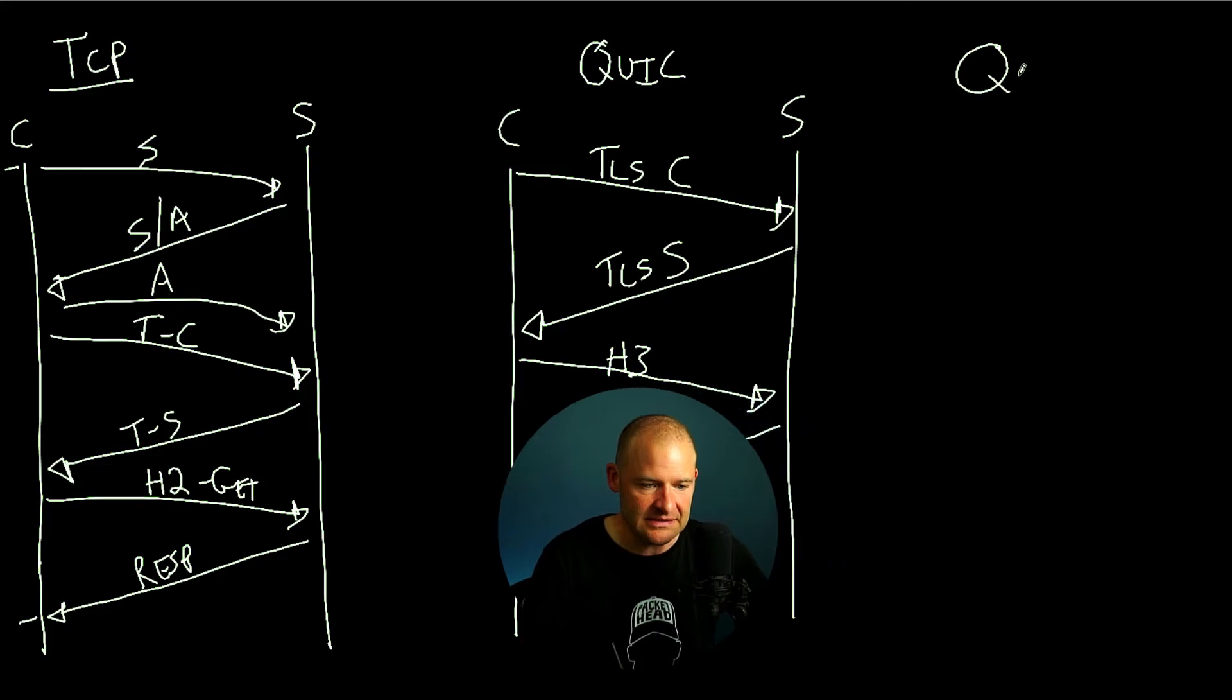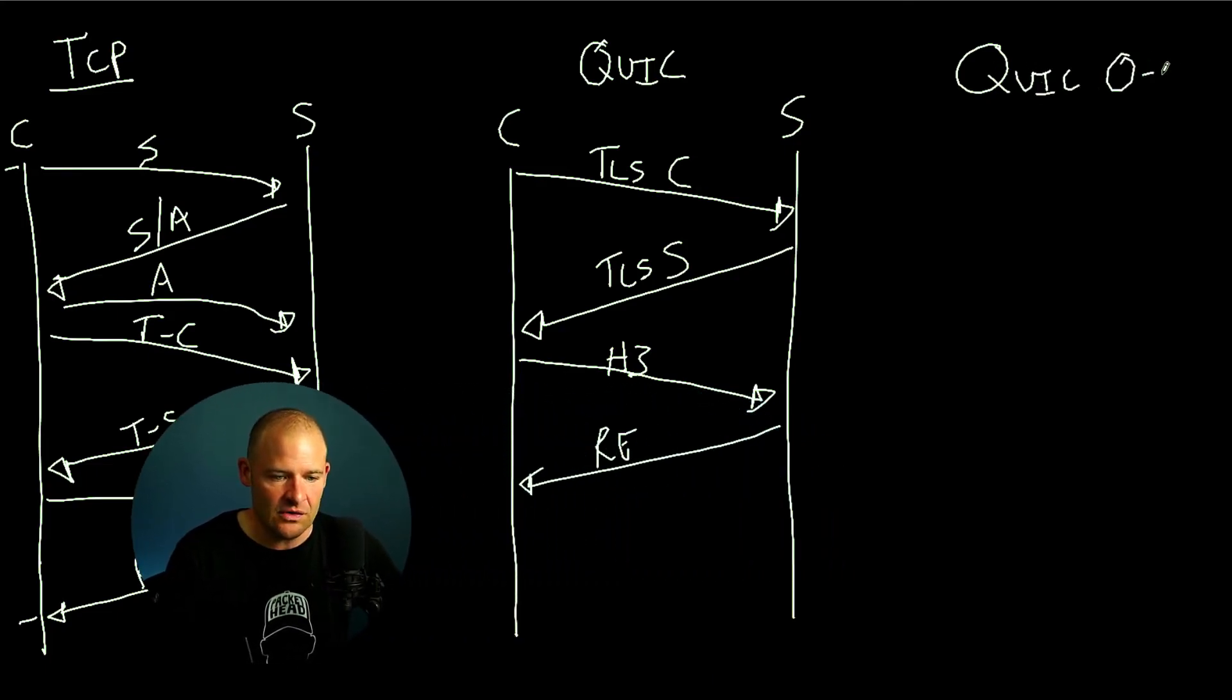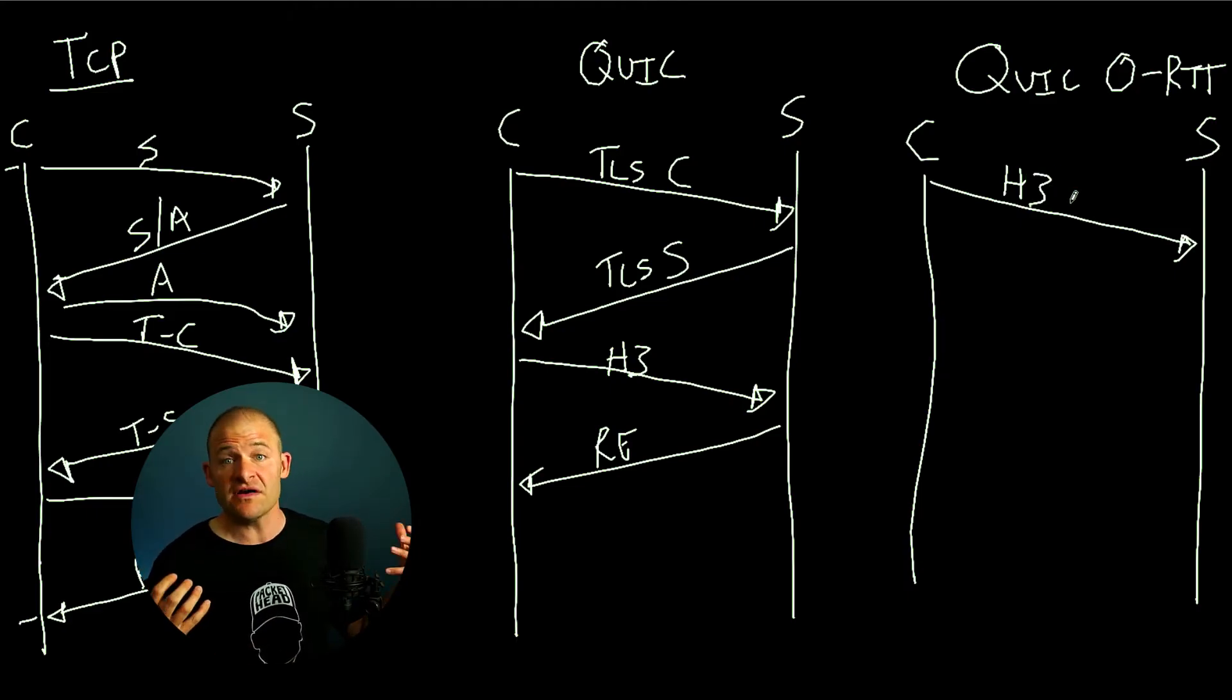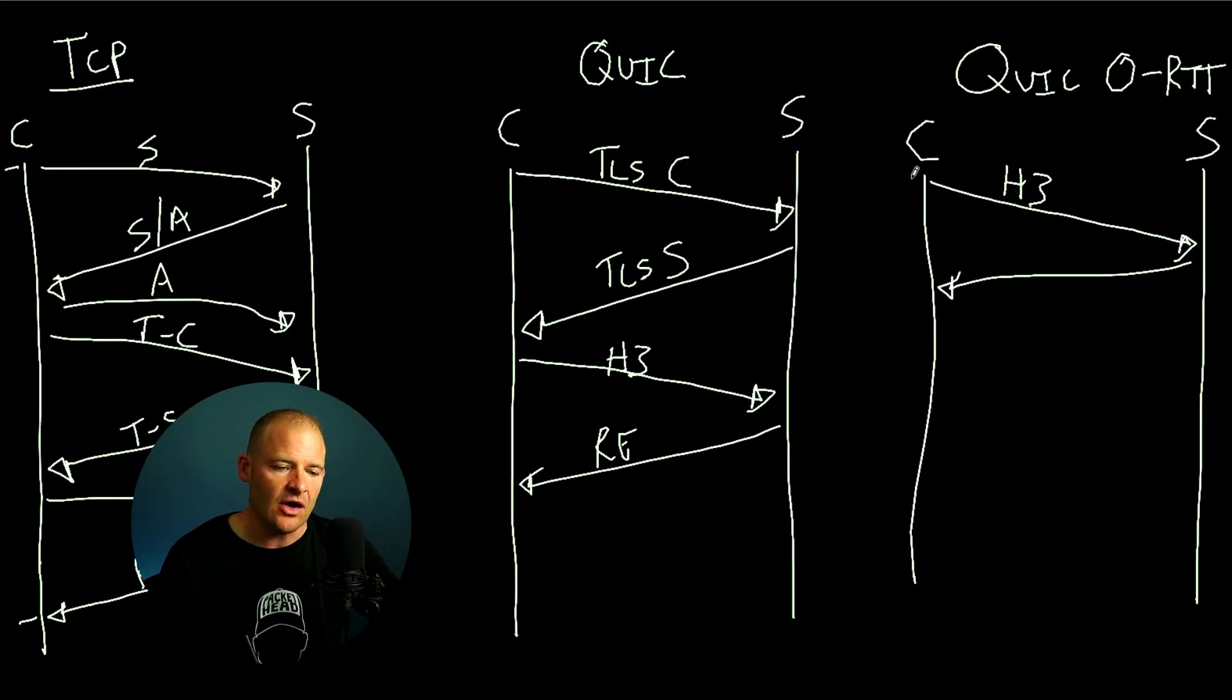QUIC also has an option to be QUIC zero RTT. What this means, let's do our client, do our server and draw time here for you. So what this means is in the first communication from the client to the server, the client can already begin to send requests to the server. Now this will only work if these two have had a previous conversation very recently in the past. So some of the parameters can already be known between the two as they're establishing this communication. But from packet one, the client can send an encrypted request and it can begin to get a response all within one roundtrip. So that's why it's called zero RTT. We don't need to burn a bunch of round trips just to set up the conversation.